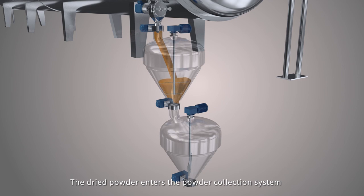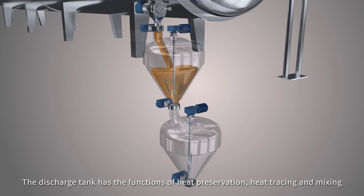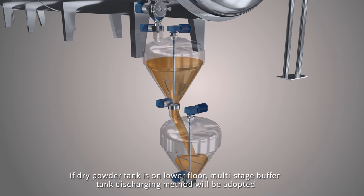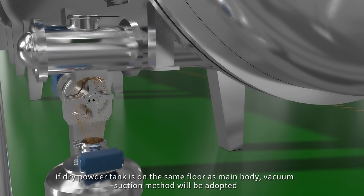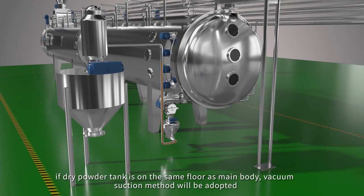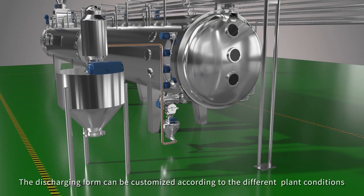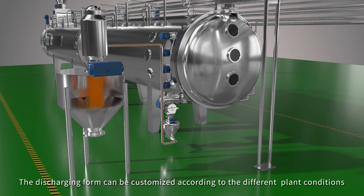The dried powder enters the powder collection system. The discharge tank has the functions of heat preservation, heat tracing, and mixing. If dry powder tank is on lower floor, multi-stage buffer tank discharging method will be adopted. If dry powder tank is on the same floor as main body, vacuum suction method will be adopted. The discharging form can be customized according to the different plant conditions.